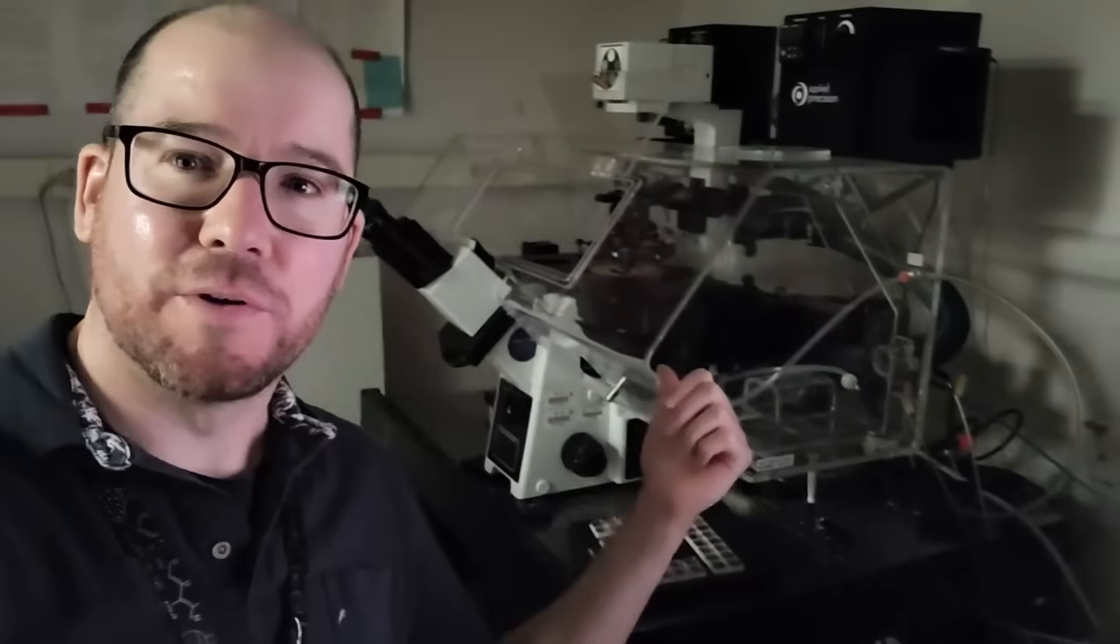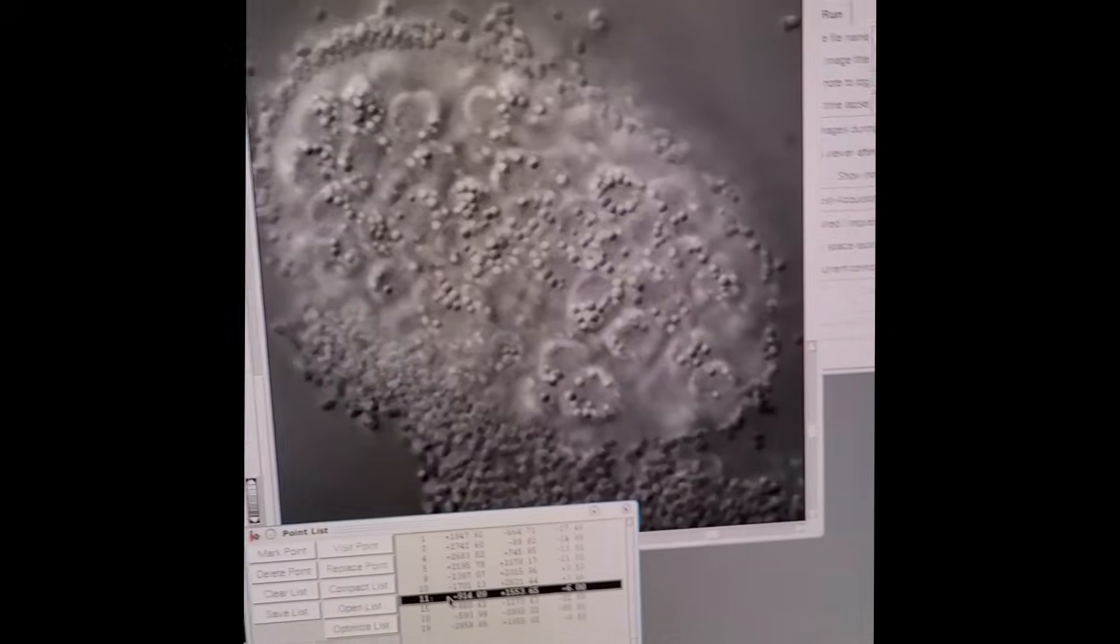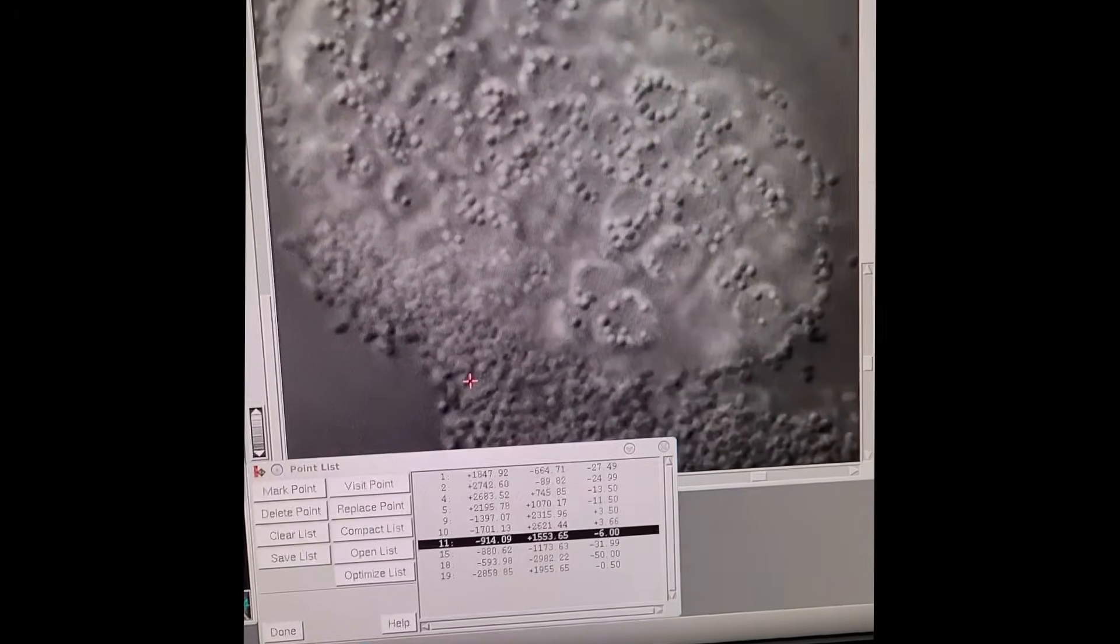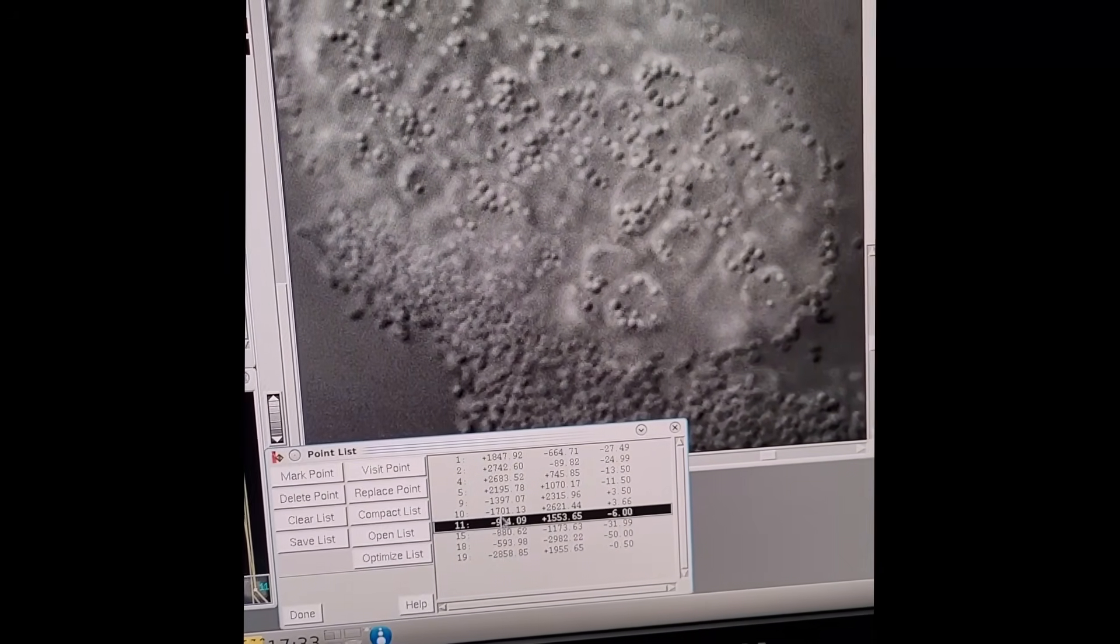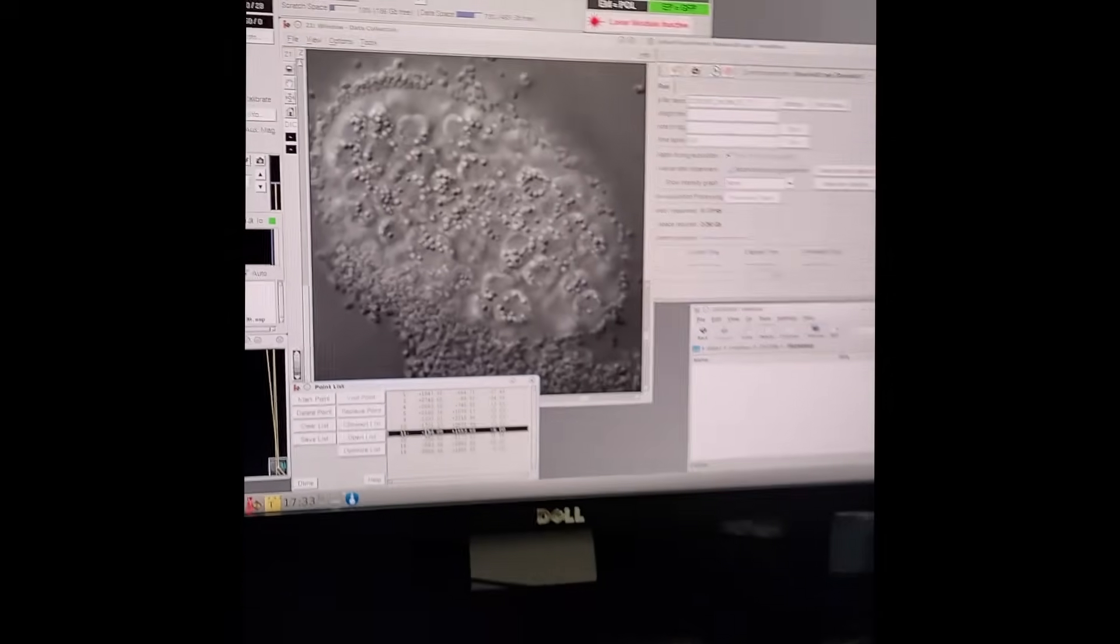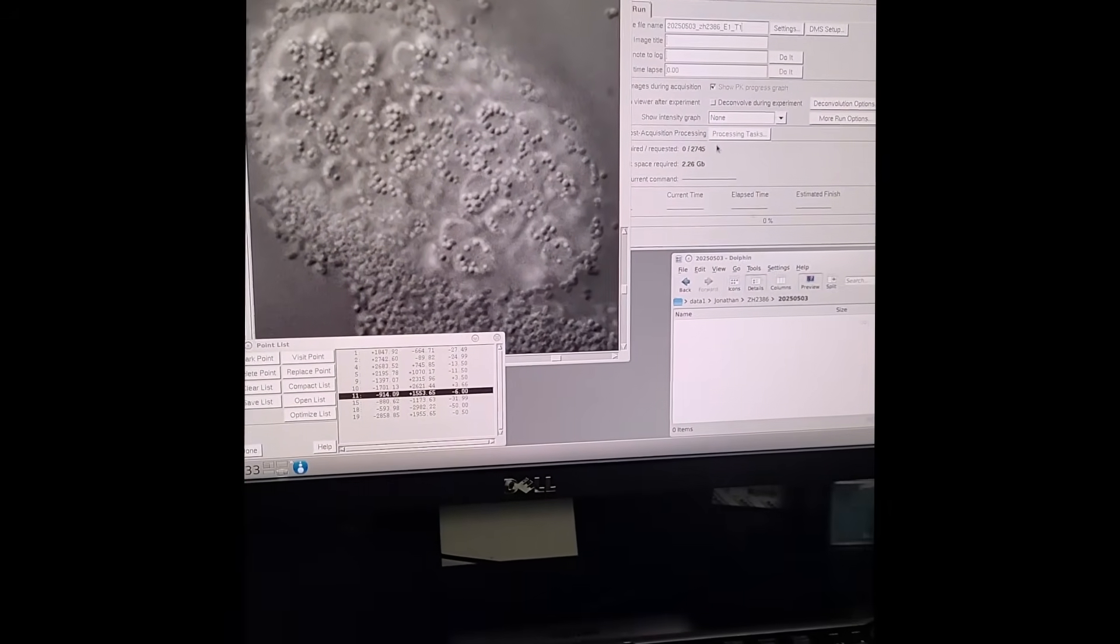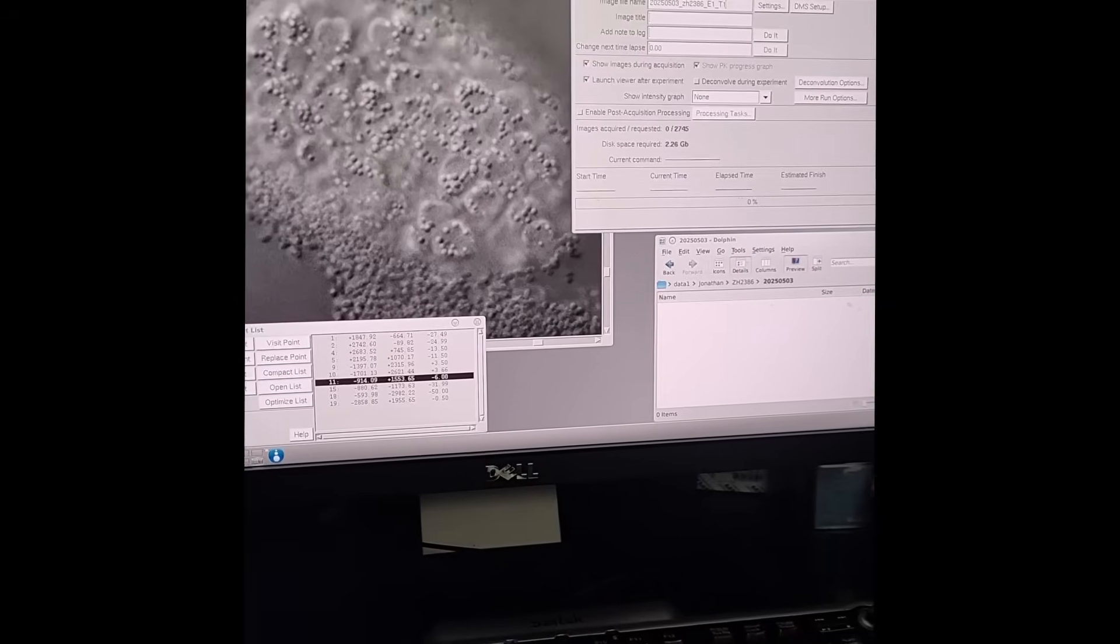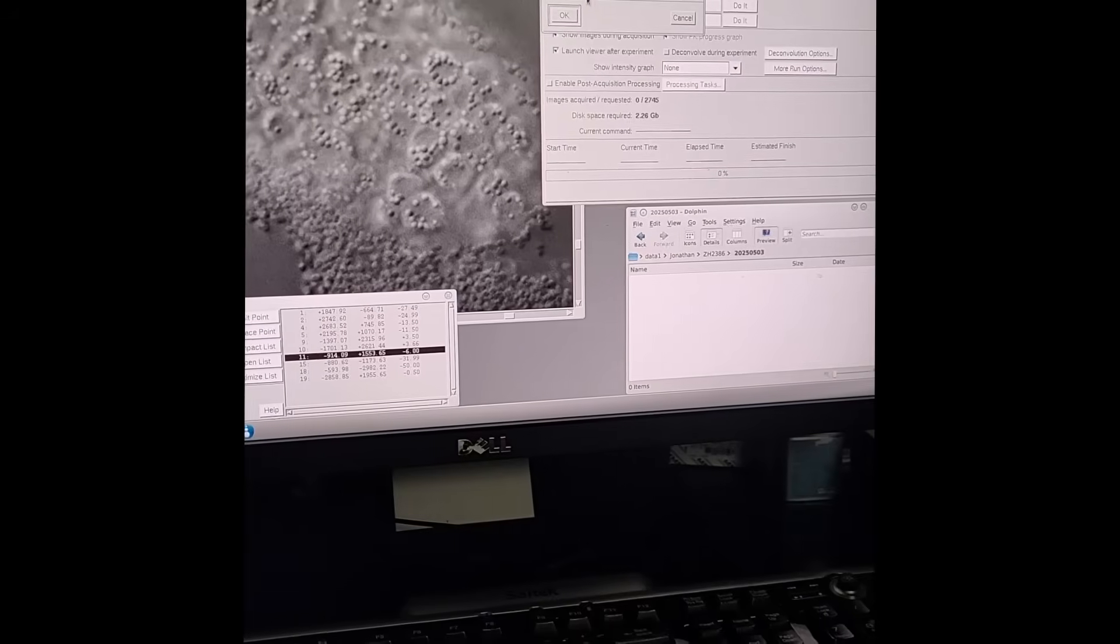So once I've mounted my slide onto the microscope and I've identified some embryos I want to image, I can turn around, pull them up on the screen and this is what they look like. So I've picked out a few of them on here and what I'll do now is, I've already set up the experimental parameters in this window, so I'll go ahead and start imaging.